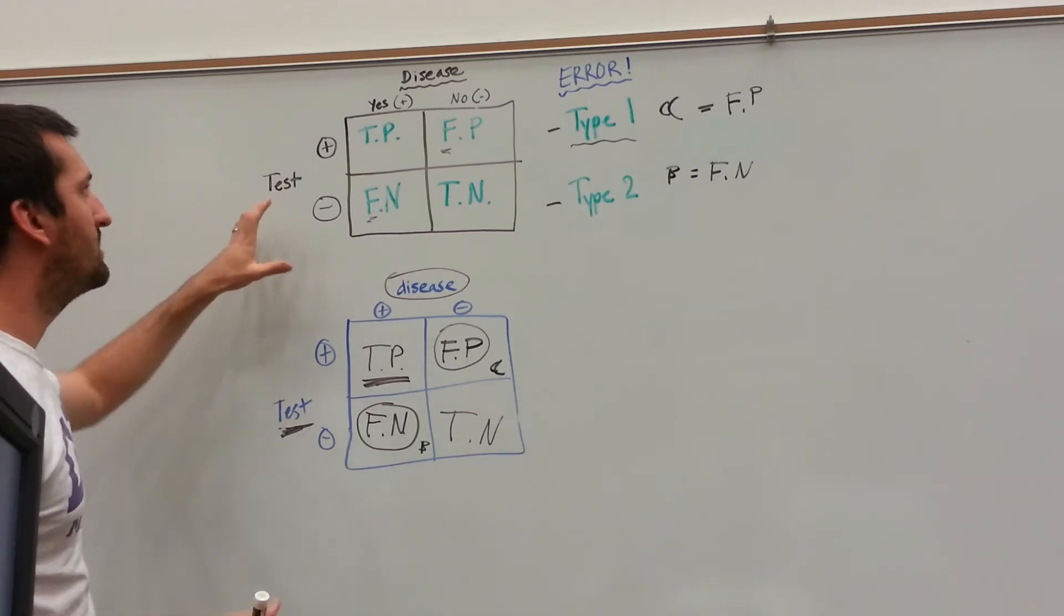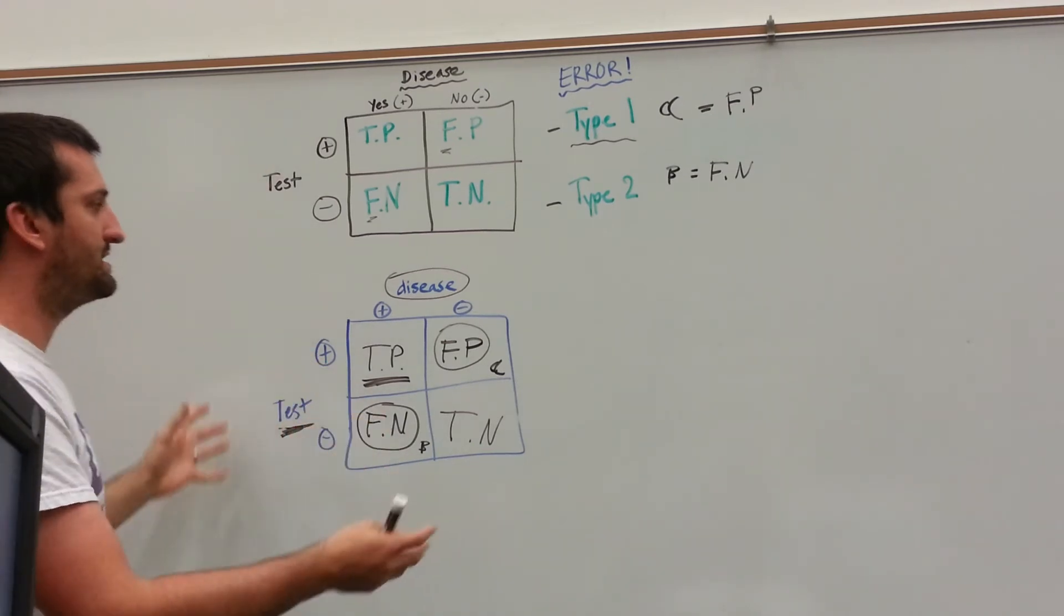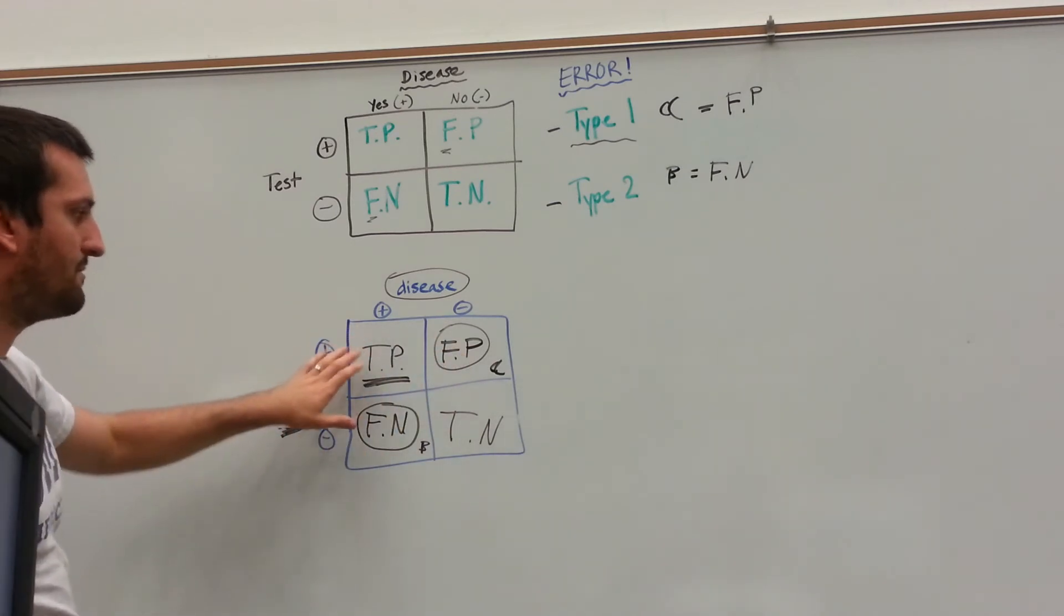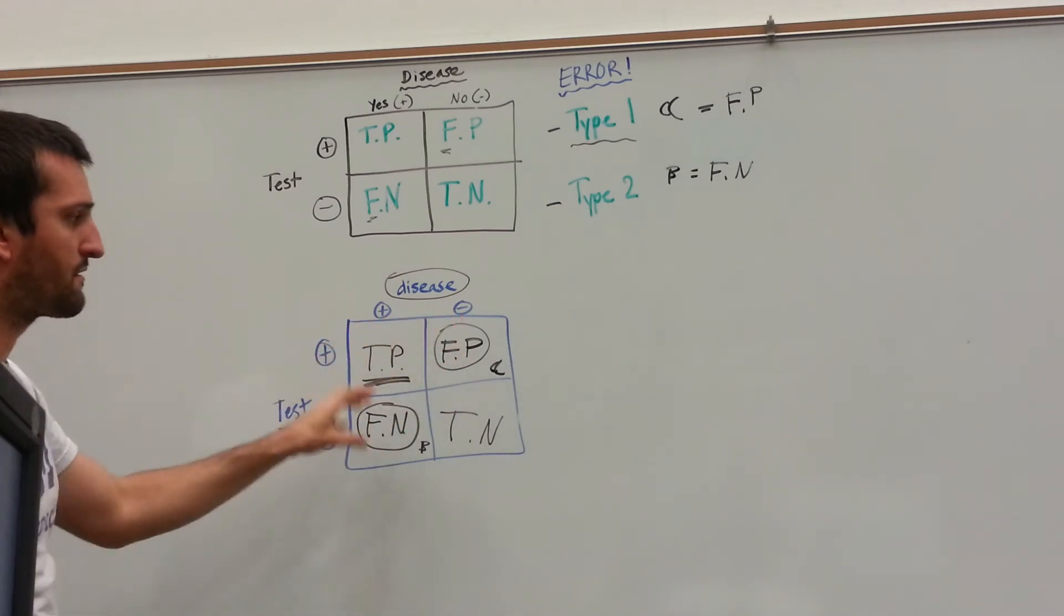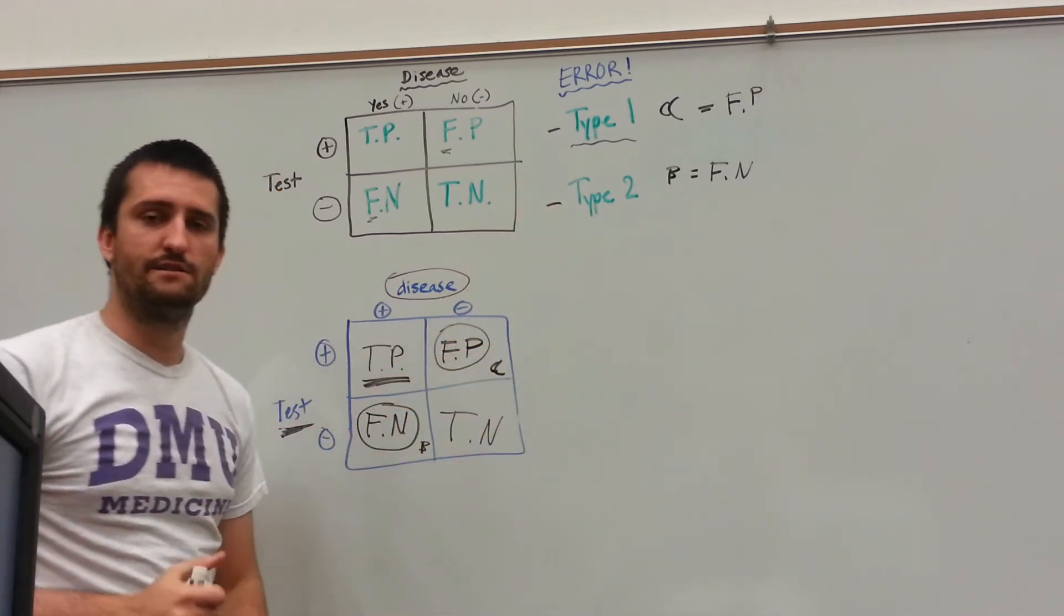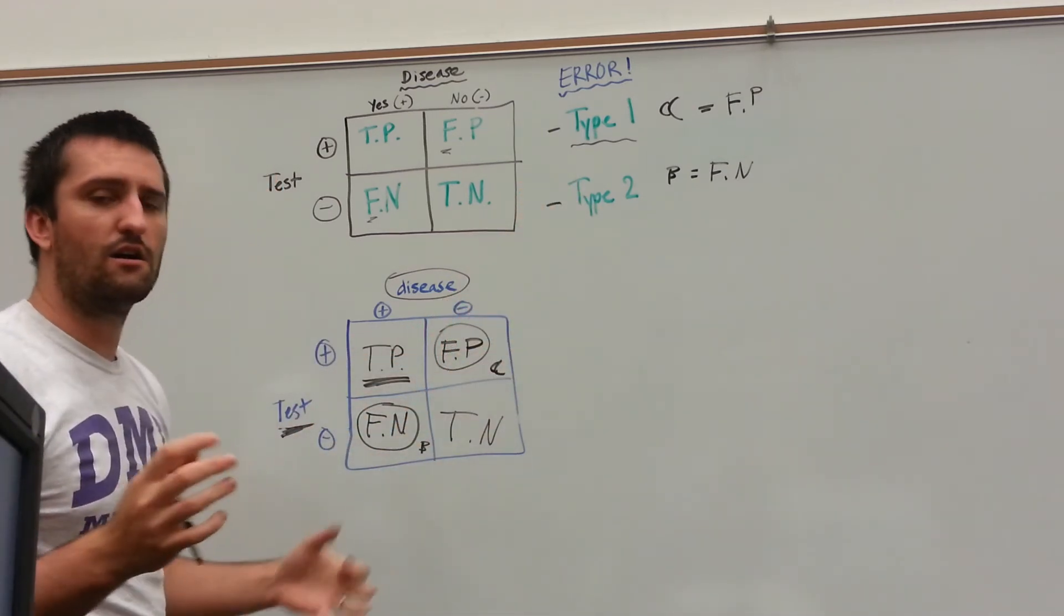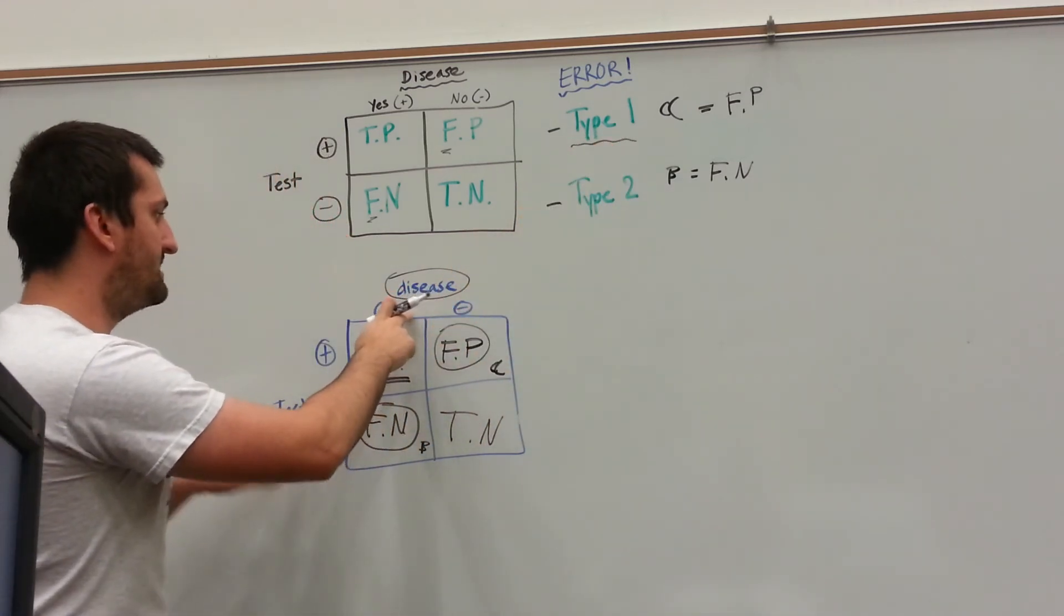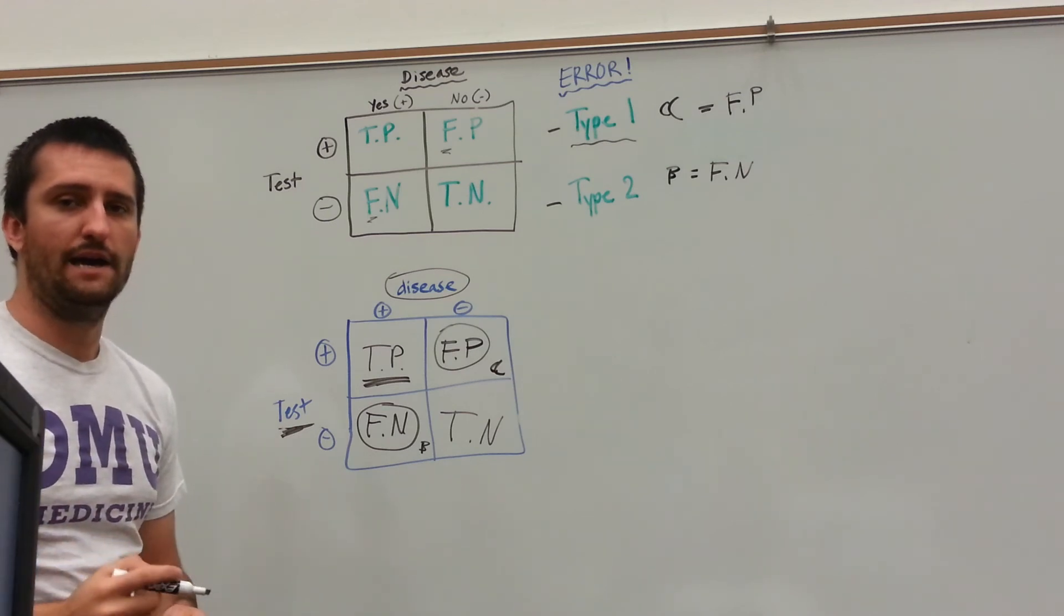But for our sake right now, hopefully you're starting to understand that there are four different outcomes. A couple of them are true, and a couple of them are false. Those false ones are associated with the types of errors that we can make. So if during our clinical study, we commit a type 1 error, that means that the disease and the test do not match.